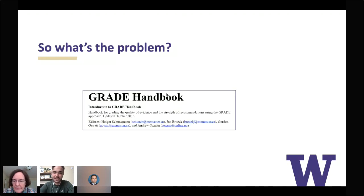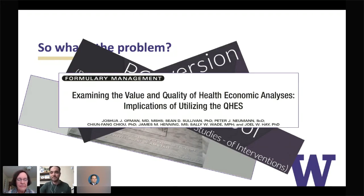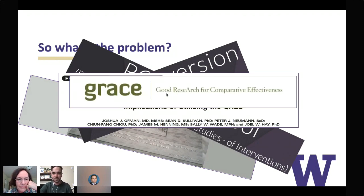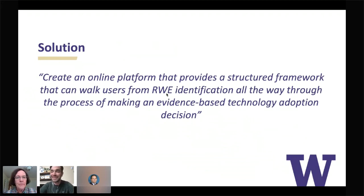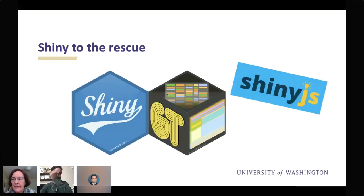If you just look through all the different guidelines — we've got the GRACE handbook, HAMSTAR, ROBINS-I, ROBINS-II — all these different aspects of real world evidence generation. There's a saying: when you have a hammer, everything looks like a nail. Beth had been working on this problem for quite some time. They developed an initial phase as a tool with an initial rollout, but we wanted to do something more structured that would take the process all the way from evidence identification through recommendation — an online platform providing a structural framework to walk users from real world evidence identification through making an evidence-based technology adoption decision. And we chose Shiny, because that's my expertise.